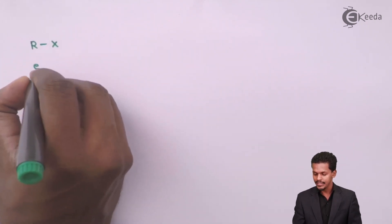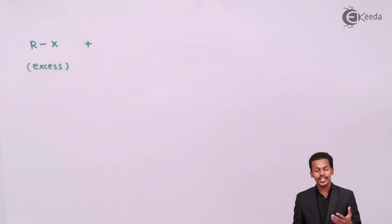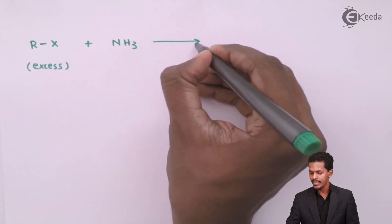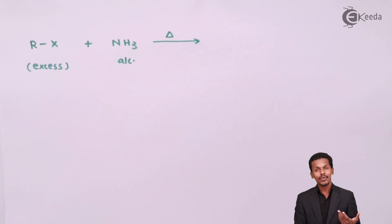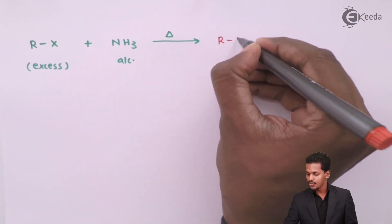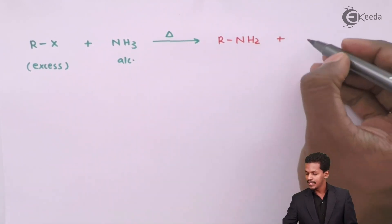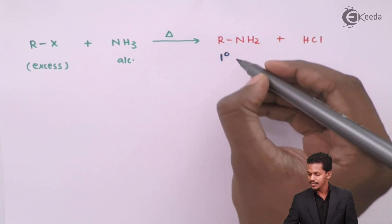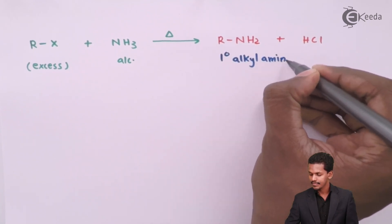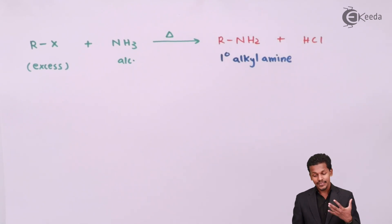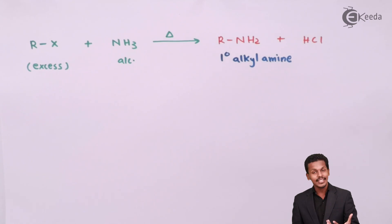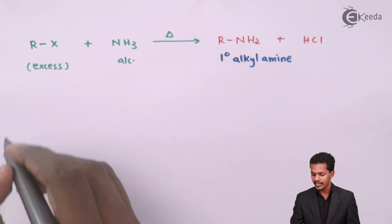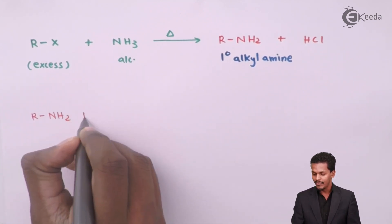When alkyl halide RX is present in excess and treated with alcoholic NH3, a substitution reaction gives primary alkyl amine R-NH2 along with HX as byproduct. Since RX is in excess, this R-NH2 further reacts with the alkyl halide in another substitution step where one H of the primary alkyl amine is replaced by an alkyl group.